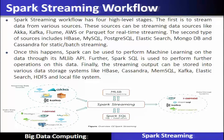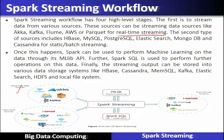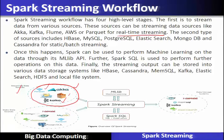The first stage is to stream the data from various sources such as Kinesis, Kafka, Flume, AWS, or FireHose for real-time streaming data input. These different sources — Kafka, Flume, and Kinesis — will give the live feed of streaming data to the system.